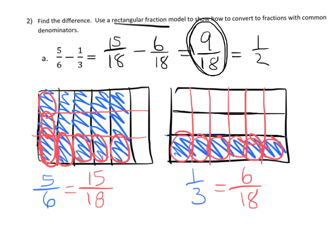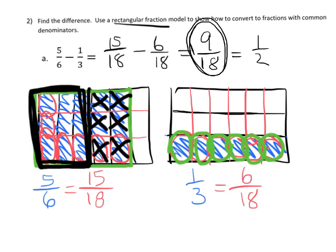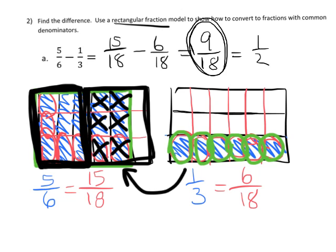Now, how do we know the answer is nine eighteenths? We start with fifteen and subtract six of those eighteenths, so I'm going to take off one, two, three, four, five, six — and that leaves us with nine eighteenths. You can even see that's exactly one half. We're not always going to draw these X's, but you can show students that these six eighteenths need to be subtracted by X-ing them out.